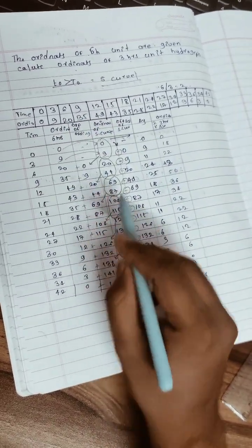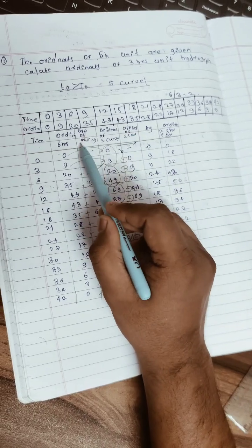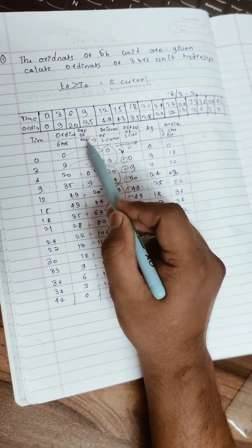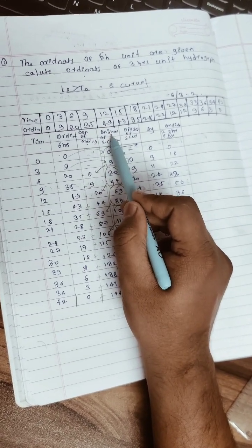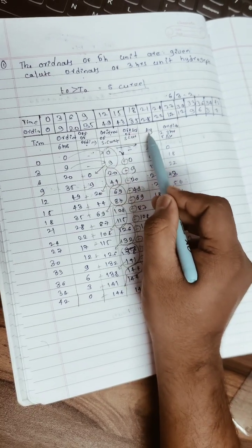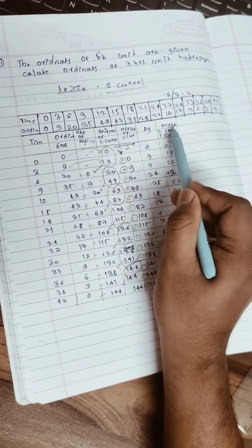In this table we have columns: offsets of ordinates, ordinates of S-curve, offsets of S-curve, delta y, and ordinates of three hour unit hydrograph. We write all these values correspondingly.